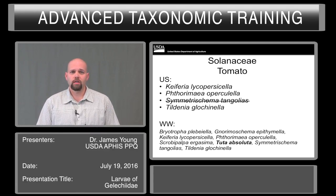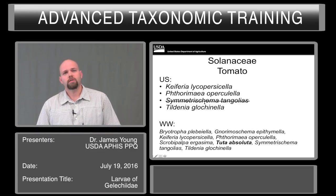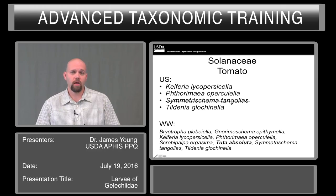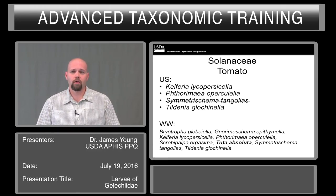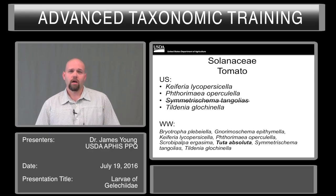Now we're going to move to the Solanaceae. The literature here is a little bit tricky. In South America and Central America, Symmetrischema tangolias is reported from tomato and various other hosts. Here in North America, for some reason the species is not feeding on those hosts. It is only known from wild occurring plants such as Deadly Nightshade.